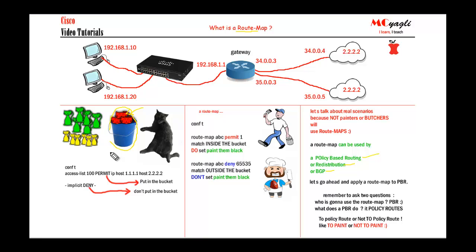Before we answer those two questions, let me show you how to create this box and put something in it. Take this ACL — it says: access-list 100 permit IP host 1.1.1.1 host 2.2.2.2. We know there are two statements here, because there is a hidden statement which denies all other traffic. When you configure an ACL, remember: permit means put in the bucket, deny means don't put in the bucket.